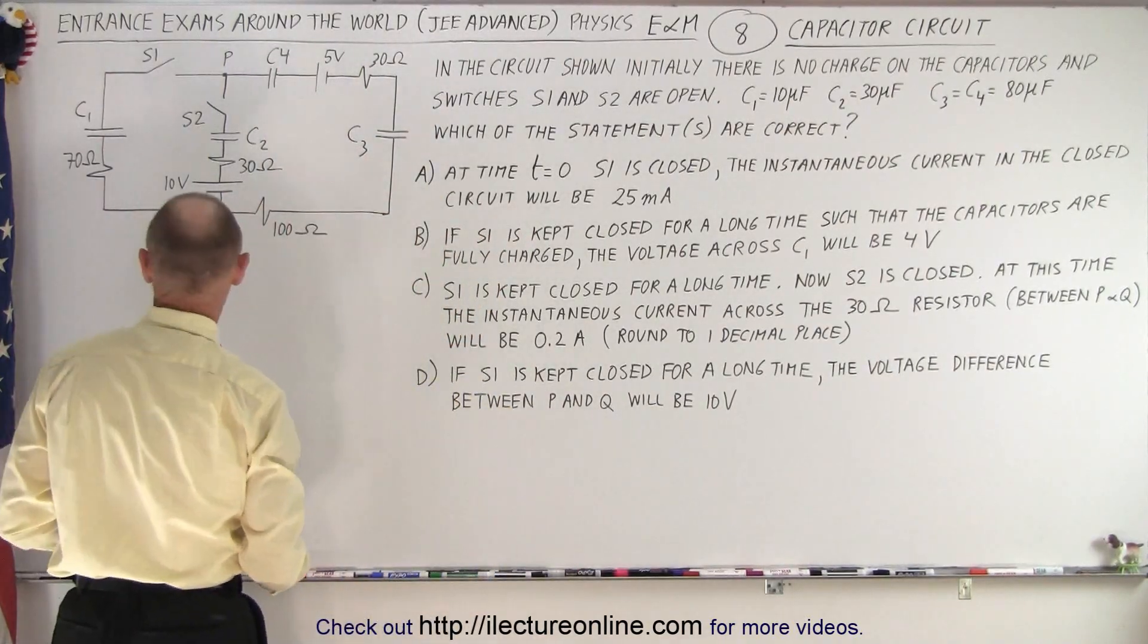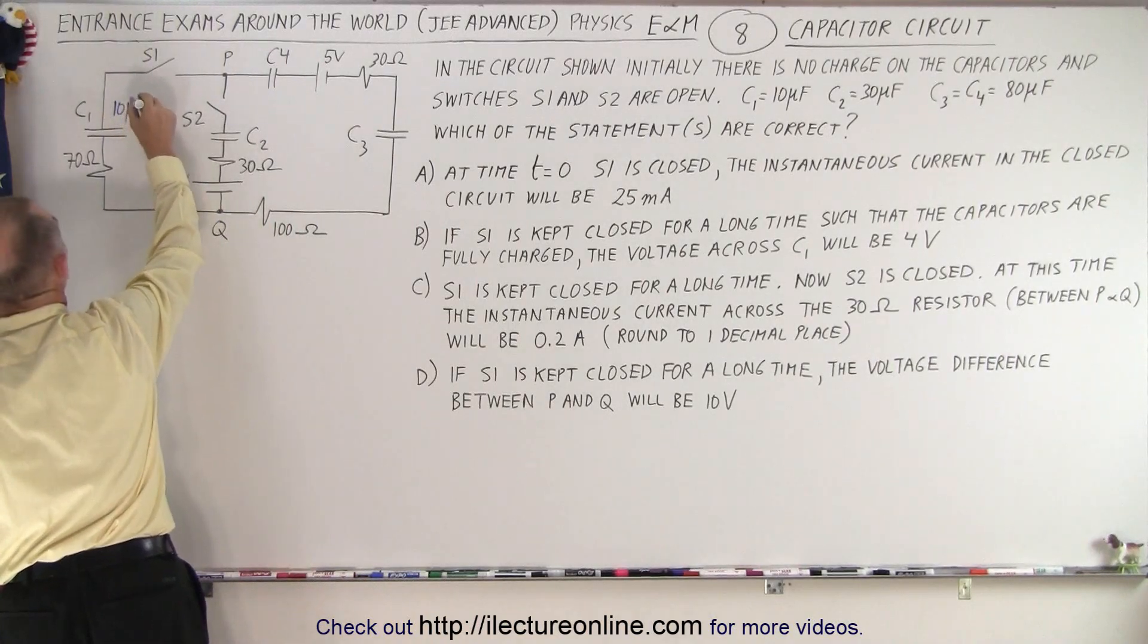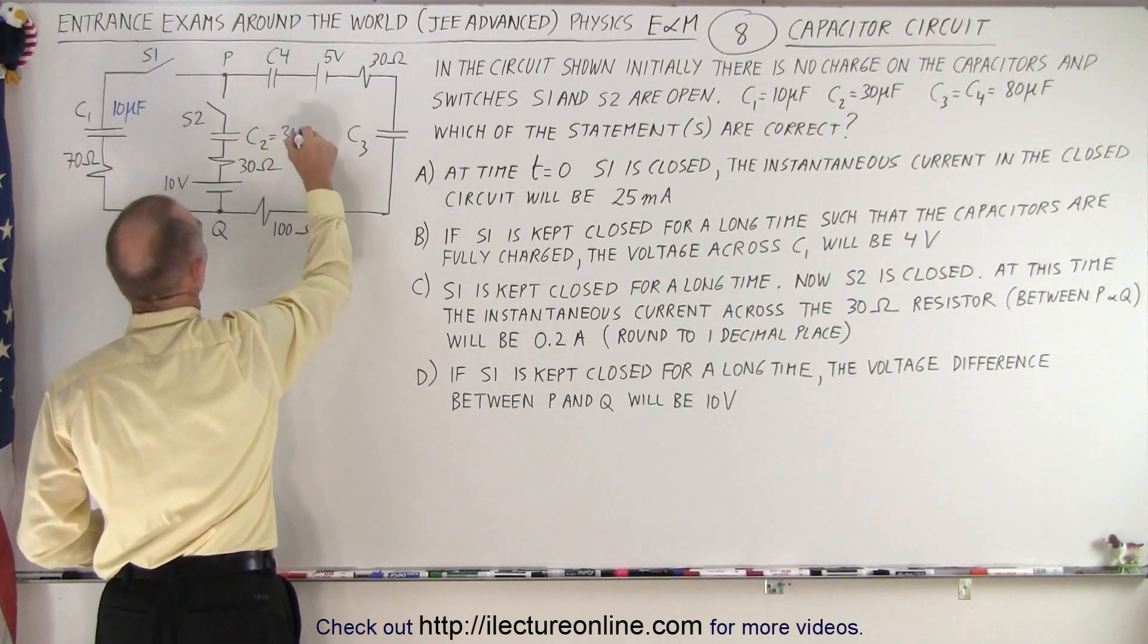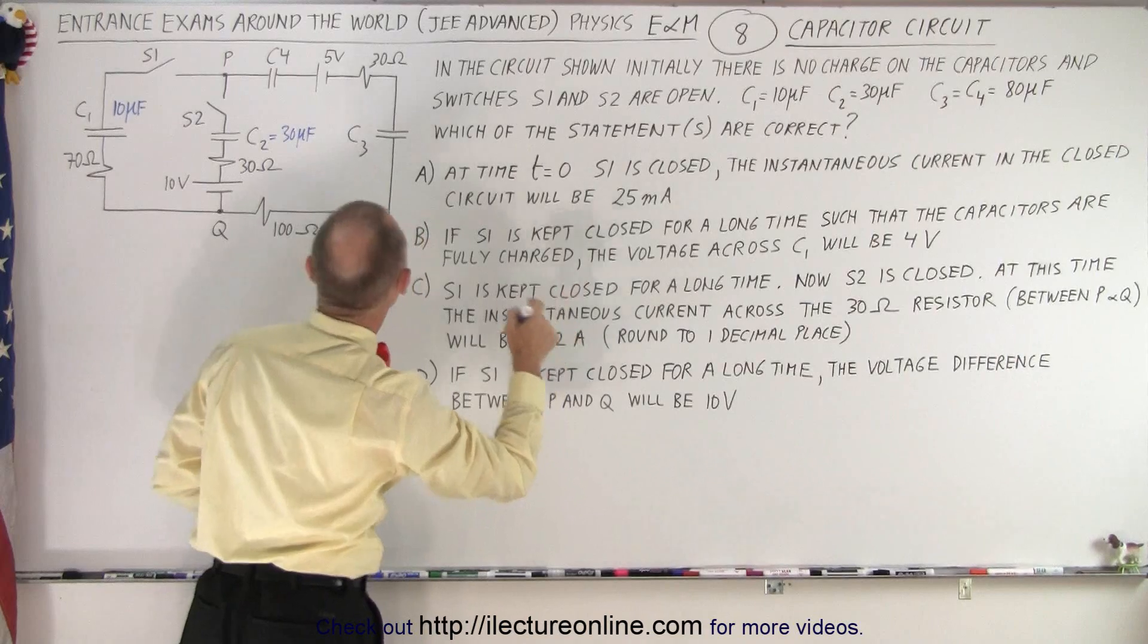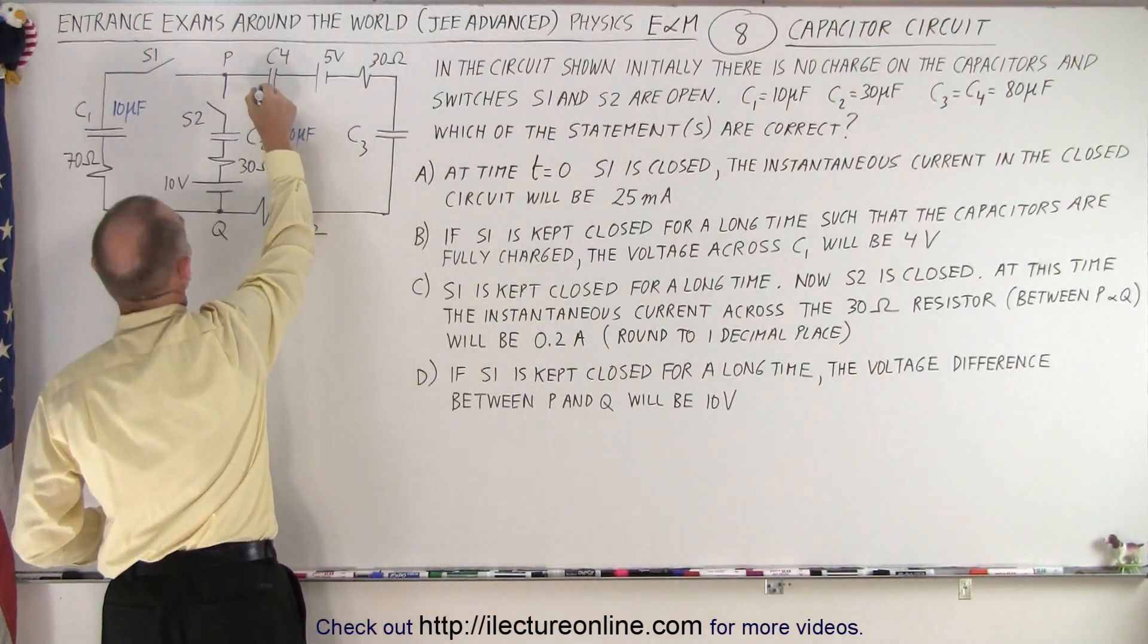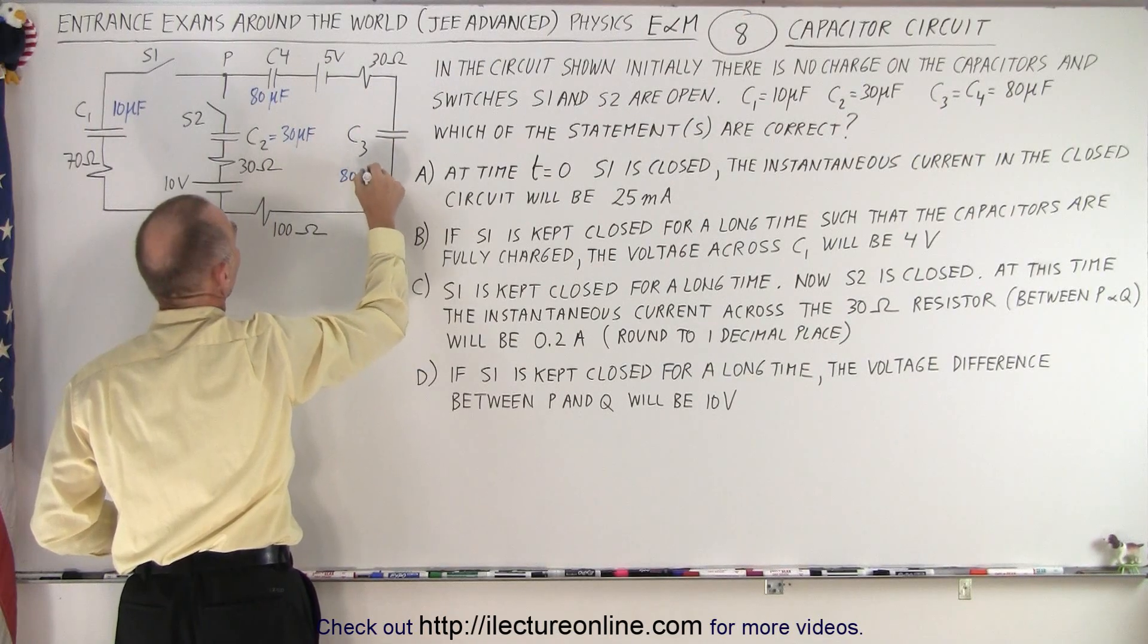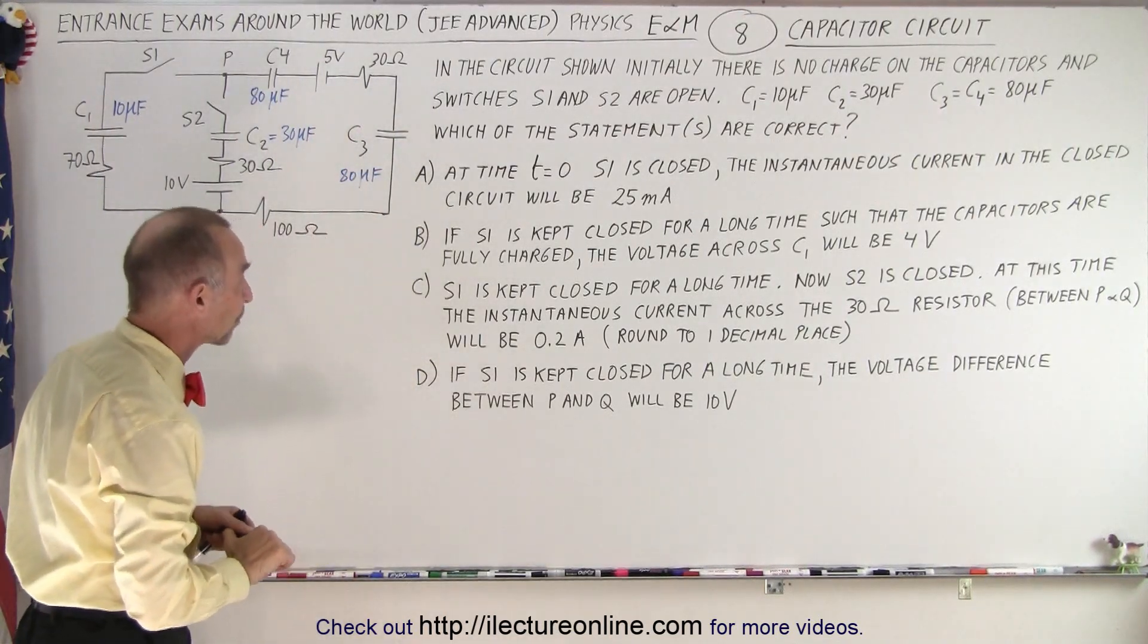So let's write them down. C1 is 10 microfarads, C2 is 30 microfarads. C4 and C3 are both 80 microfarads. It just makes it easier, less likely to make mistakes.